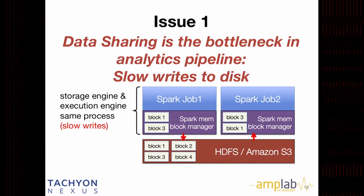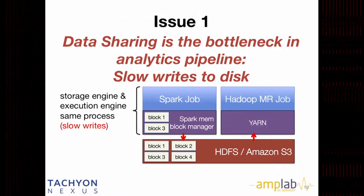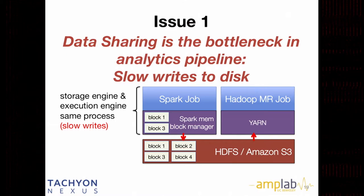Then on the right side, another Spark job loads the data back. This sharing process is slow. Also, you could have legacy code written in MapReduce that you still want to use — you have a lot of investment there even though you want to write new code in Spark. So the question is: how do you share this data efficiently?